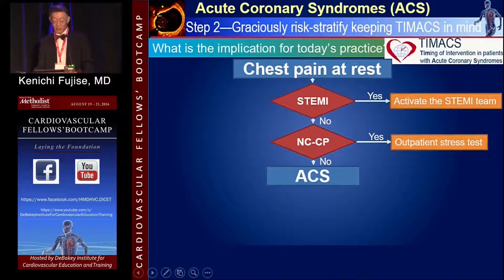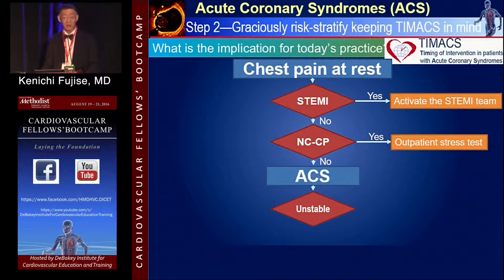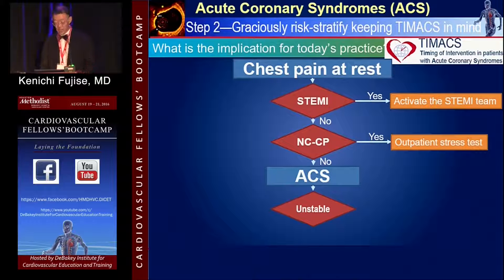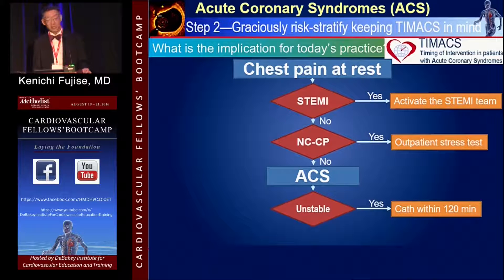When you make a diagnosis of ACS, you have to right away assess whether your patient is stable or unstable. Is the patient hypotensive, having arrhythmia, VT or VF, or persistent chest pain? If that's the case, activate the cath lab and bring the patient to the catheter lab within two hours.